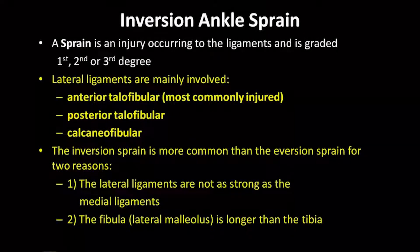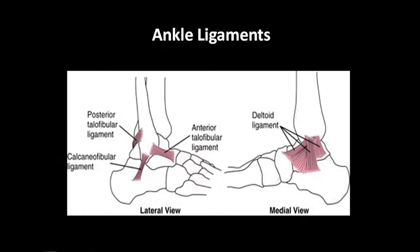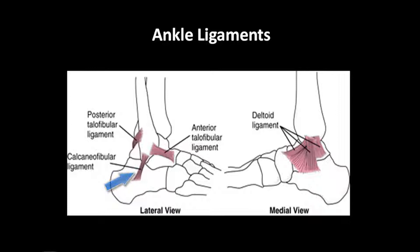The inversion ankle sprain, also known as a rolled ankle, is the most common injury in sports. The three lateral ligaments are mainly involved and named for the bones they hold together: the anterior talofibular ligament is the most commonly injured, the posterior talofibular ligament, and the calcaneofibular ligament.